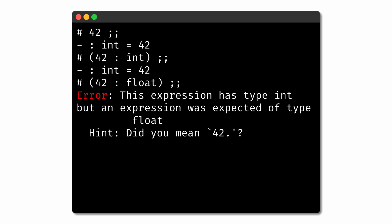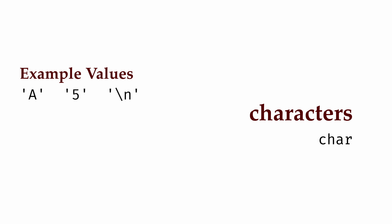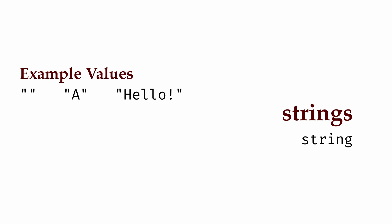If we're working with text instead of numbers, OCaml has a few other types that will be helpful. The char type represents a single character, and we can specify a character value by including that character in single quotes. The string type is used for a sequence of characters — it might be the empty string, it might contain a single character, or it might contain multiple characters. We specify strings in OCaml using double quotes. Just as there are operators for working with integers and floating point numbers, there are also operators for working with strings, like the string concatenation operator.